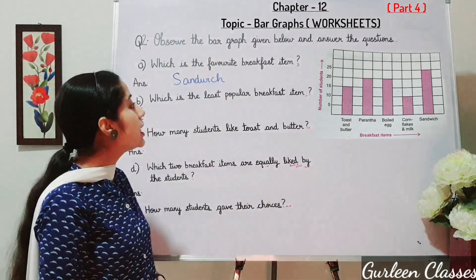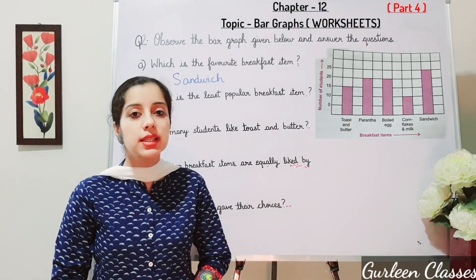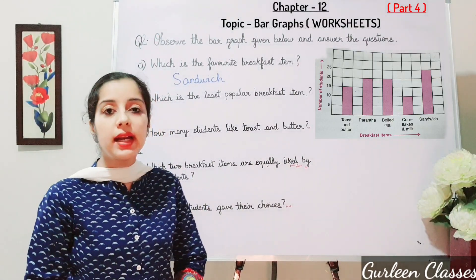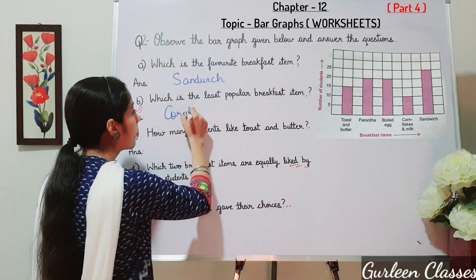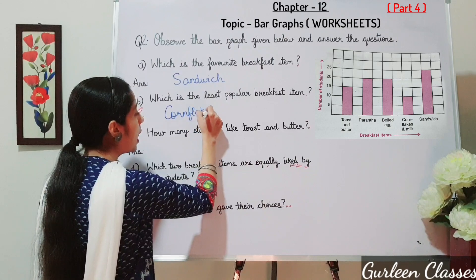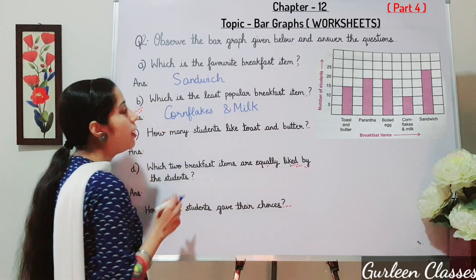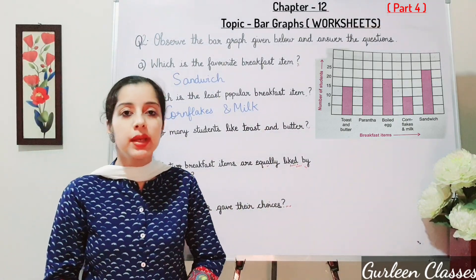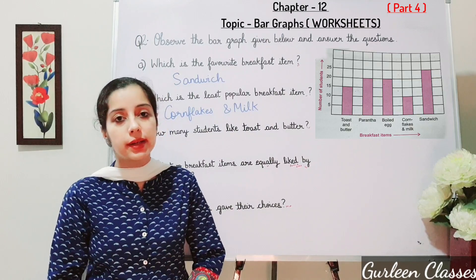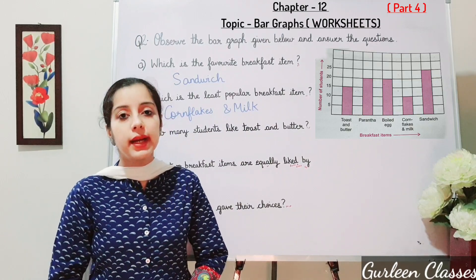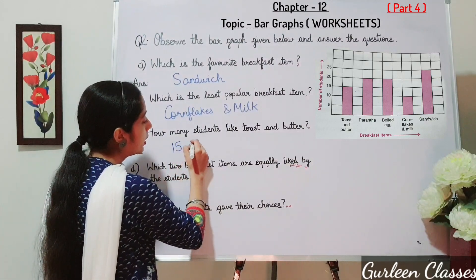Part B: which is the least popular breakfast item? The least popular breakfast item is cornflakes and milk, and only 10 students like it. Part C: how many students like toast and butter? 15 students like toast and butter.